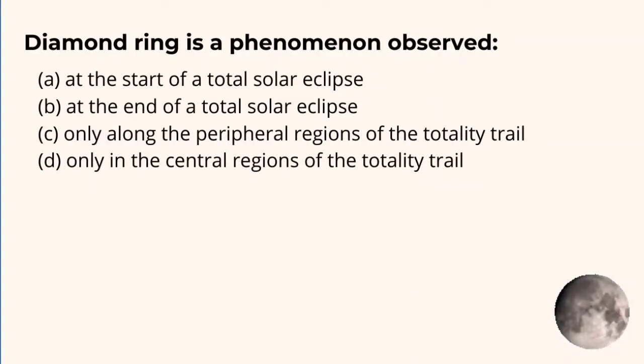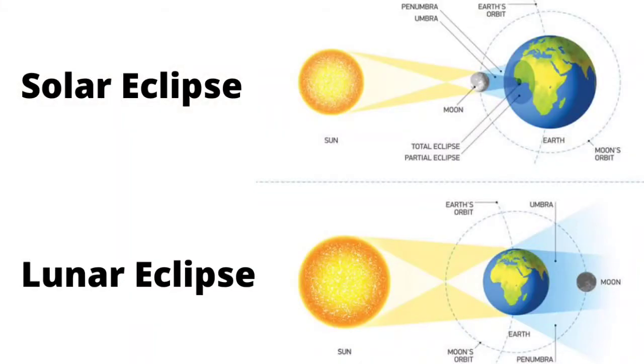So, let's see what is actually happening during the diamond ring phenomenon. Before that, we have to understand what is an eclipse. Eclipse is an astronomical phenomenon. We all know that when any celestial body is in the shadow of another celestial body, we call it an eclipse.